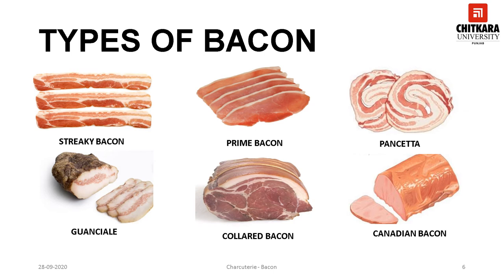Next is collared bacon. The collar is the cut from the shoulder area of the pig. The meat from the collar is salted and cured and then smoked — it is called collared bacon. If the entire shoulder is boned, rolled, cured and smoked then it is referred to as picnic ham or shoulder ham.